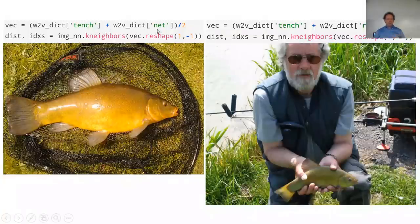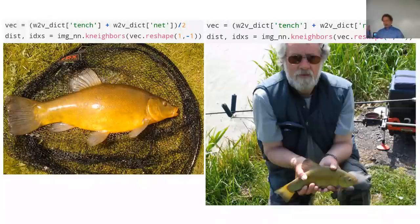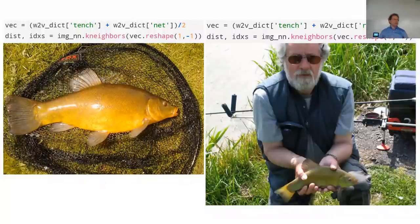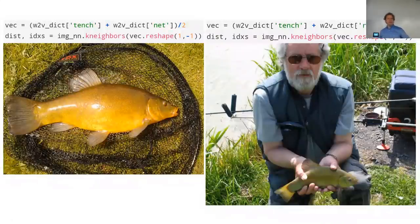This DeViSE model is clearly doing some pretty deep magic in terms of understanding objects and their relationships. Not only are we able to combine things like this, but we're able to combine it with categories it's literally never seen before - it's never seen a rod, we've never told it what a rod looks like, and ditto for a net. I tried quite a few of these combinations and they just kept working. Another one I tried: boat doesn't appear in ImageNet, but there are lots of kinds of boats that appear. So it figures out how to find boats. Then I tried boat plus engine and got back pictures of power boats, and boat plus paddle gave me pictures of rowing boats.